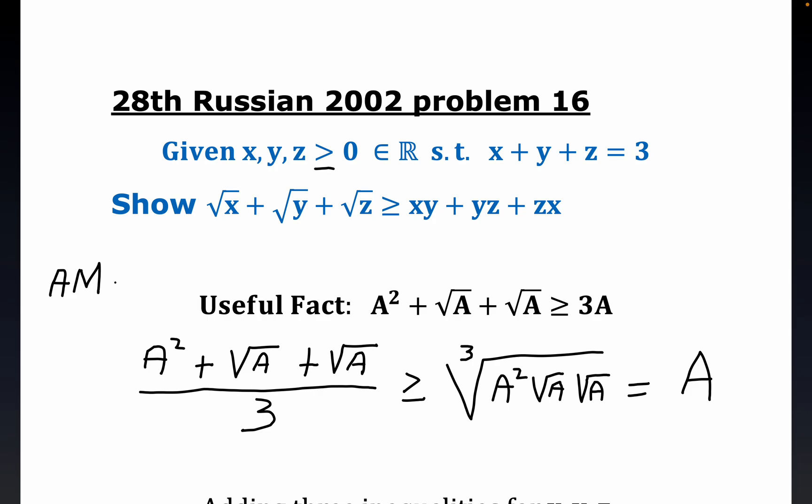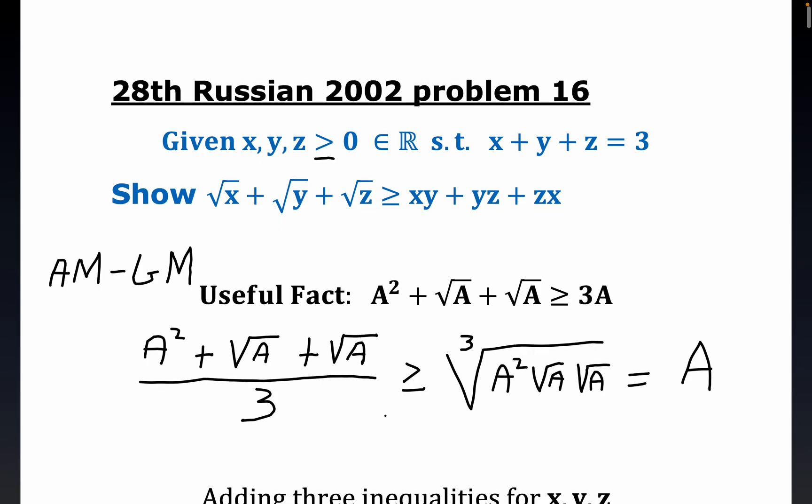And the word arithmetic is often associated with addition. Geometric is often associated with multiplication. But arithmetic mean, geometric mean, it's a very popular competition, IMO sort of inequality that gets used. So anyway, now that we have this, the rest of it's fairly straightforward.